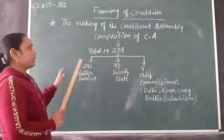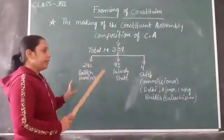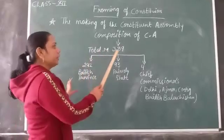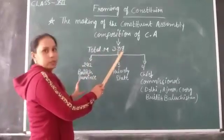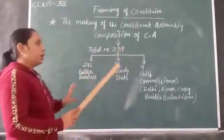You will see how the members were divided. There were 389 members in total at that time, and we are going to look at how these members were divided.